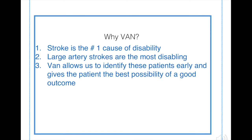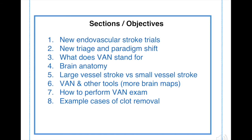So why VAN? VAN is a way to tell if someone is having a very large stroke. Stroke is the number one cause of disability, and large artery strokes are the most disabling. VAN allows us to identify these patients early and give them the best possible outcome by making sure they are treated with TPA right away, then triaged to the endovascular suite for stroke thrombectomy — meaning pulling out the clot — which has been shown to increase the number of people who are functional after a large stroke.